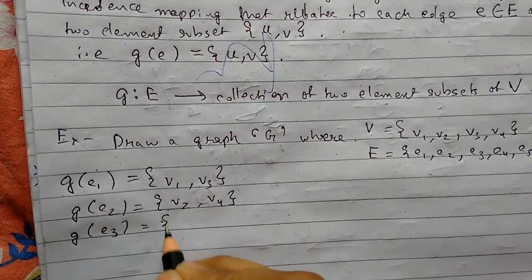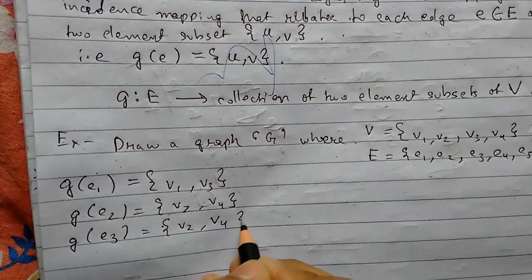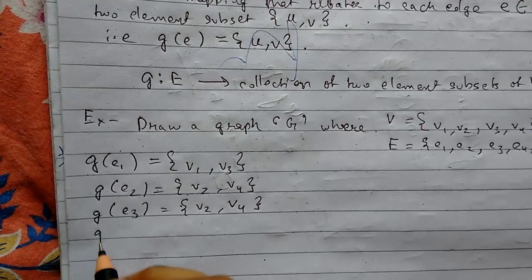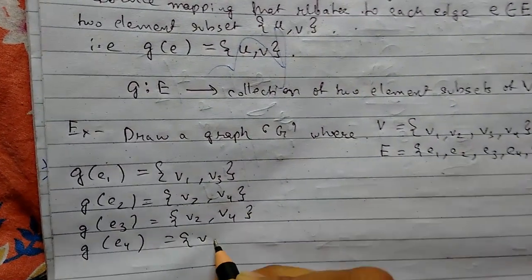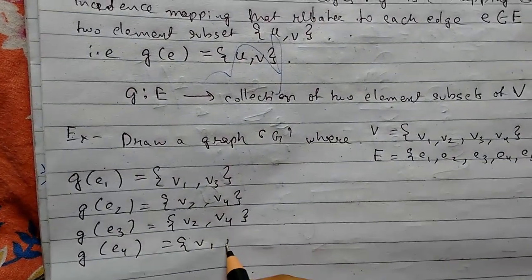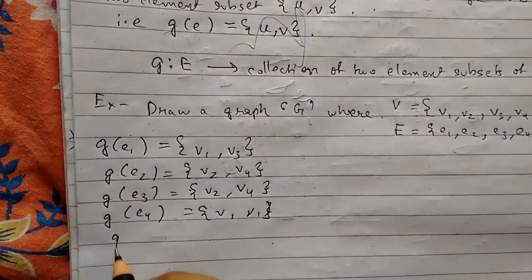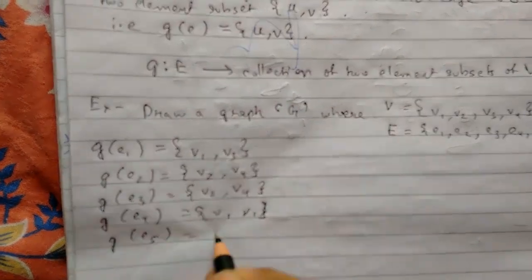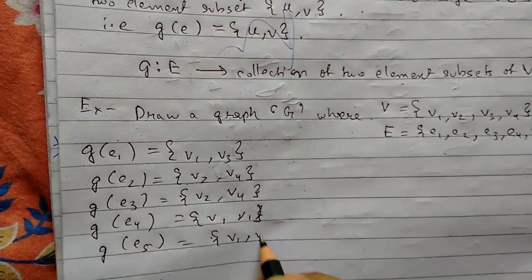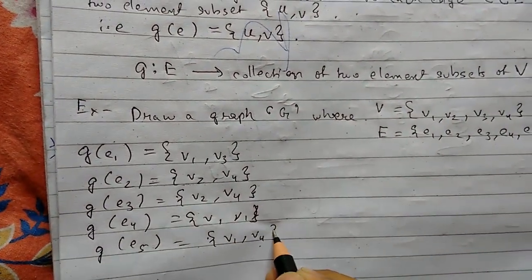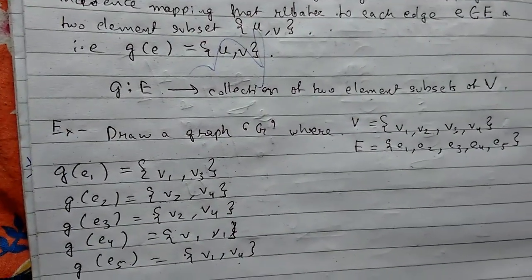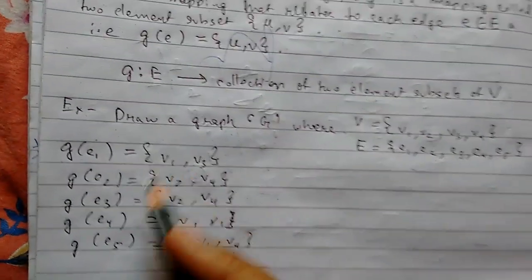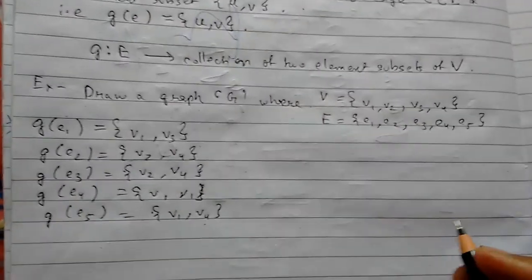So for example, G of E1 is V1 comma V3, and G of E5 is V1 comma V4. We have to construct a graph — this is the mathematical form, and now we need to draw it.